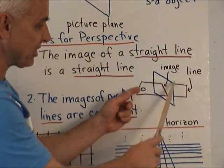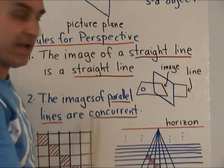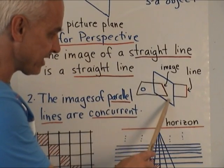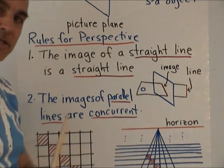that plane intersects our picture plane in another line. And so the image of this line will be this straight line here. That's the first principle.